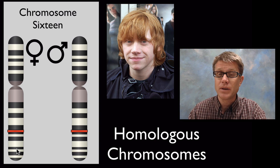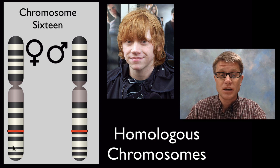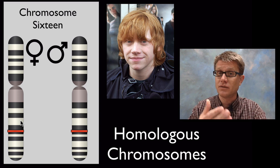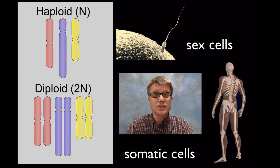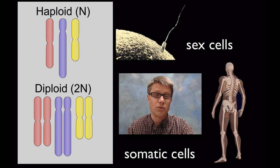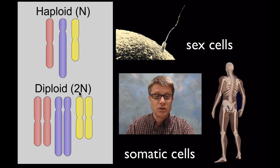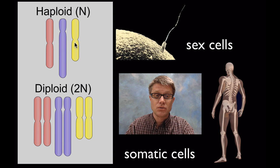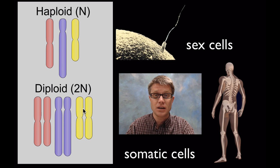Every cell in your body is diploid — that means it has two complete sets of chromosomes and therefore two complete sets of genes. What cells in our body are like that? All the cells. All the cells in our body, at least in humans, are going to be somatic cells. Somatic cells means body cell. So every cell is going to be diploid, or 2N. N refers to the number of chromosomes. In a haploid cell we have one, two, three chromosomes, and in a diploid cell we're going to have two of each of those chromosomes, so a total of six.